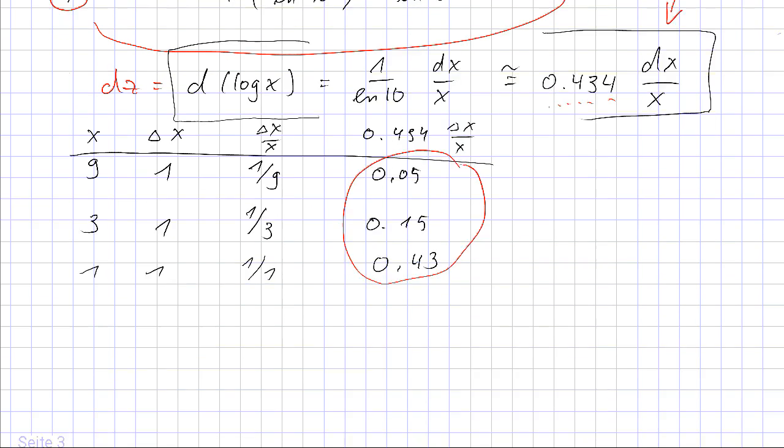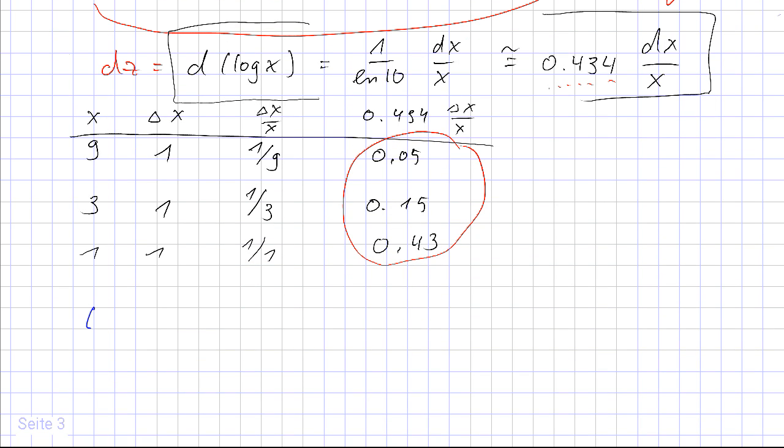So that means to summarize: in logarithmic plots, use relative errors and plot log x plus minus 0.434 delta x over x.